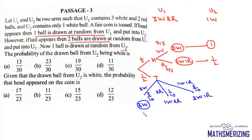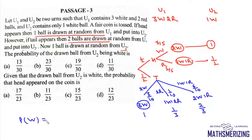The probability of getting a white ball: for 3 white it is 1, for 1 white and 2 red it is 1/3, and for 2 white and 1 red it is 2/3. Now we need to find the total probability that a white ball is drawn from U2, which is a conditional probability so we multiply all these probabilities together.